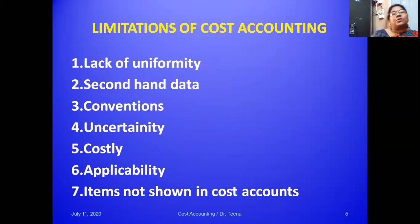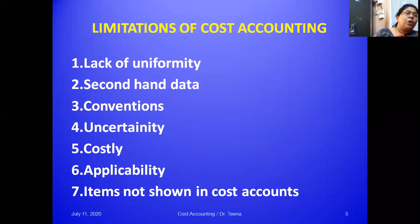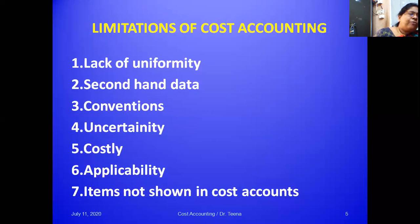Now let's look at the limitations of cost accounting. The first limitation is lack of uniformity — there is no uniform system of costing applicable to all industries. Even within the same firm, two different cost accountants may arrive at two different costs. The second limitation is that cost accounting uses secondary data; it depends on financial accounts for much of its information, so any errors or shortcomings in that data carry over into cost accounts.